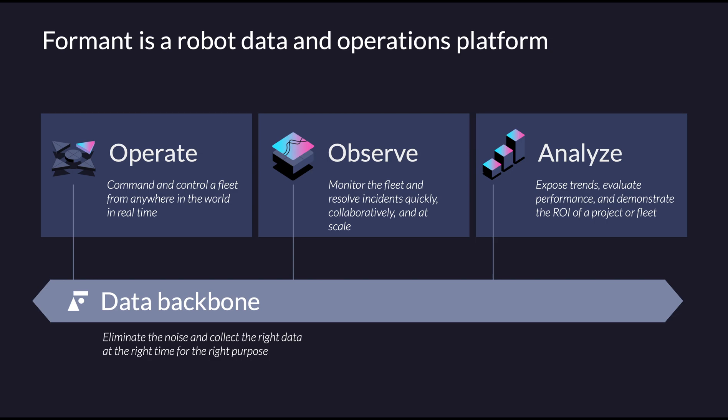The Formant platform is comprised of four product components. The Operate component provides real-time command and control, configuration management, direct command line access, and essentially allows for the use of any robot capability, either remotely or while in the field. It's used any time an operator needs to get hands-on with a robot.